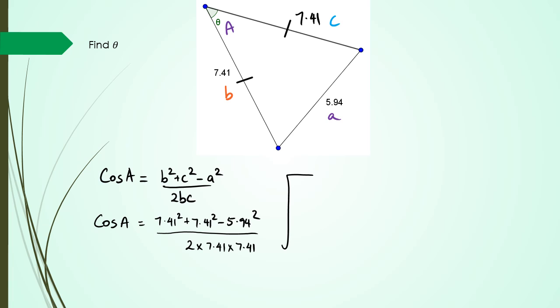This should give us cos A = 0.67, and then A = cos⁻¹(0.67). In this case, we're looking at theta, so theta is 47.25 degrees.